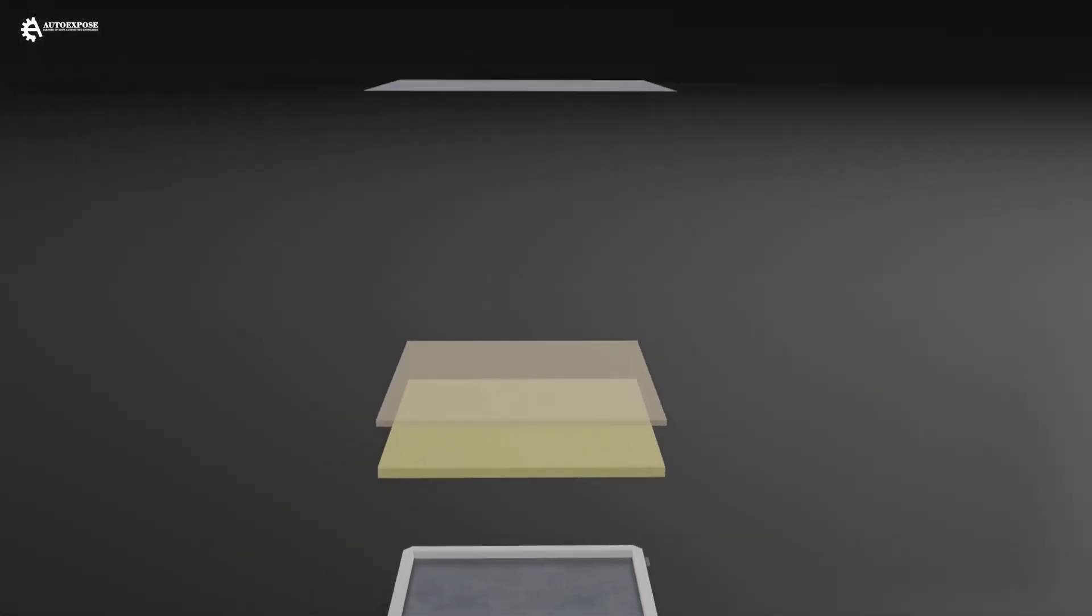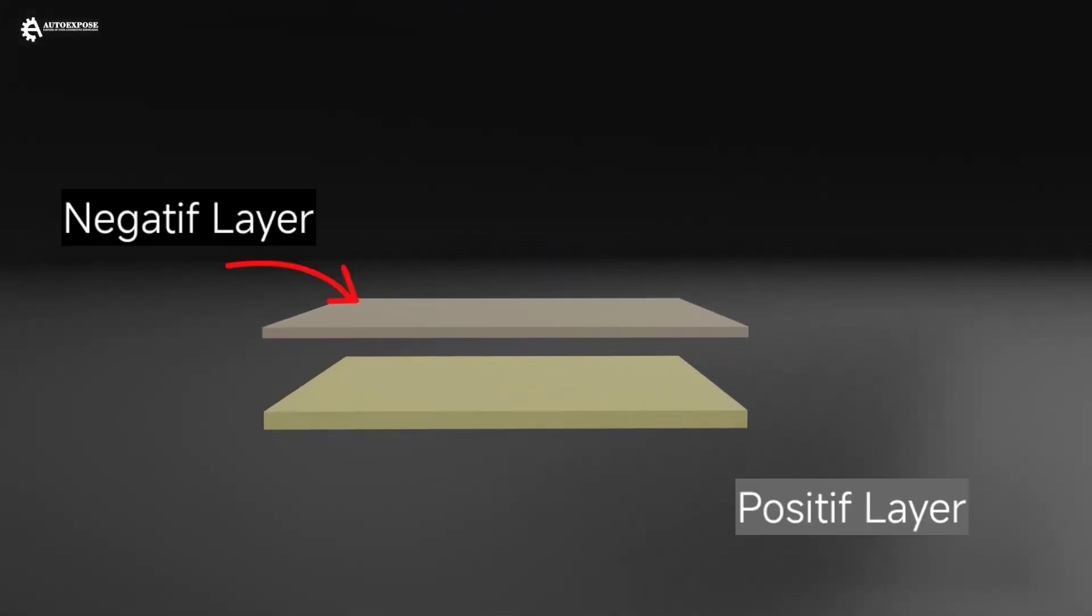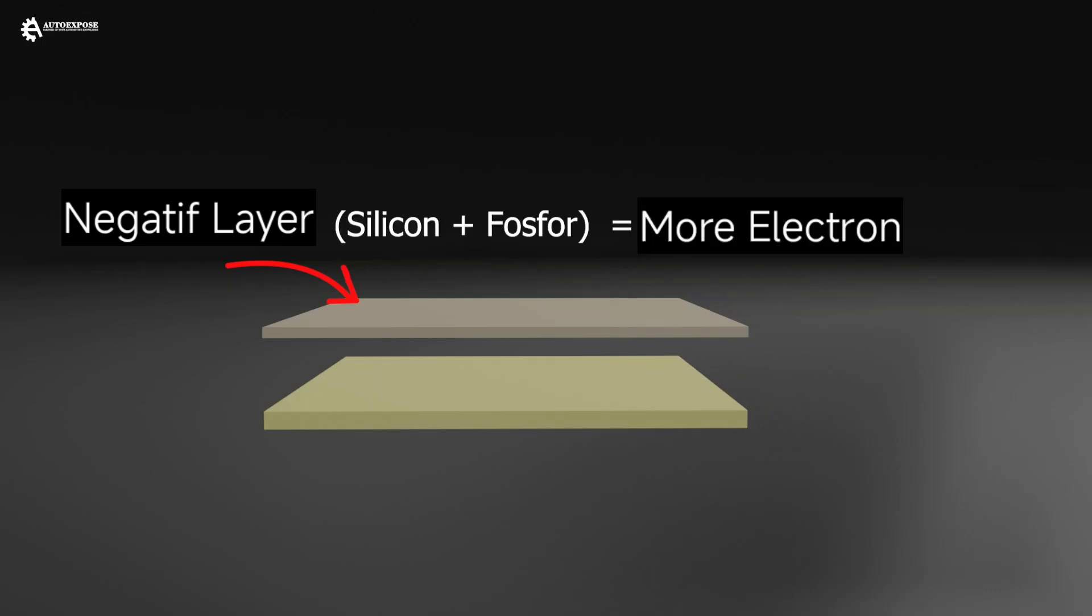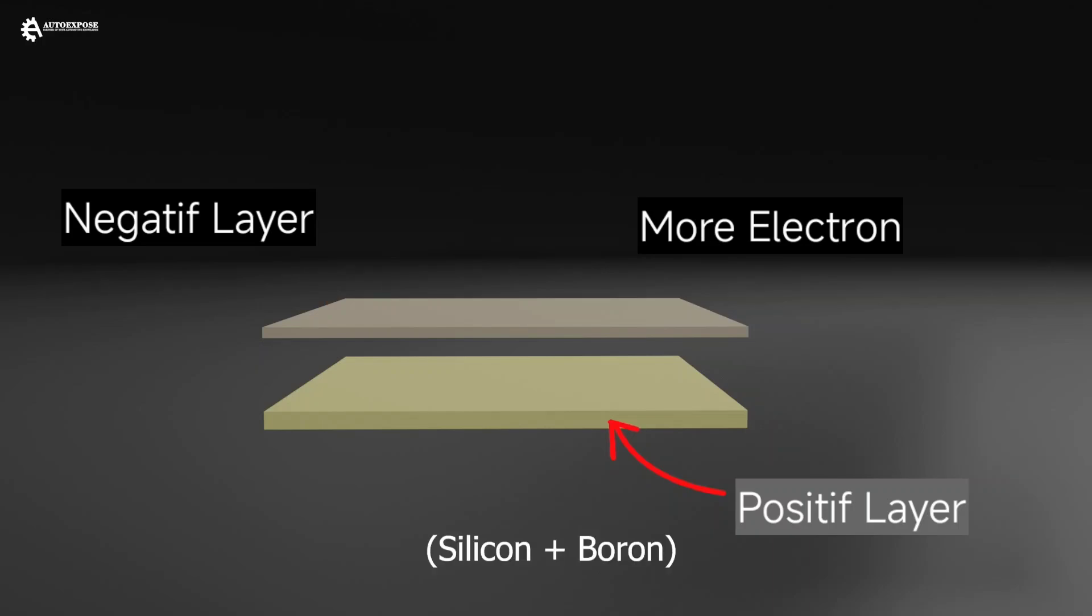The negative layer located above and the positive layer located below. The negative layer is made of a mixture of silicon and phosphorus. This causes the negative layer to have an excess of electrons, while the positive layer is made of a mixture of silicon and boron. This mixture lacks electrons, giving rise to a kind of electron hole that can attract electrons.